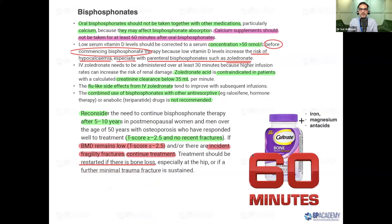Bisphosphonates should be taken on an empty stomach, remaining upright for at least 30 minutes. Enteric-coated risedronate (Actonel) allows patients to take it with or without food. Importantly — and this was a RACGP exam question — calcium, iron, magnesium supplements, or antacids must be taken at least 60 minutes apart from bisphosphonates, as they heavily impact bisphosphonate absorption.